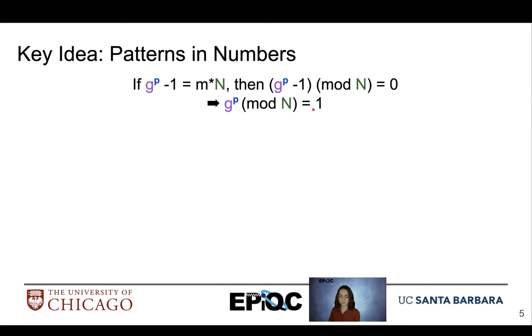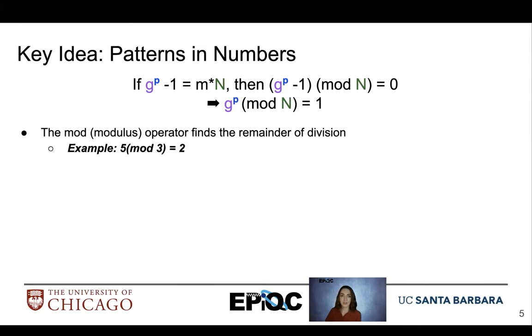So as a refresher, the modulus operation or mod finds the remainder of division. So here we have 5 mod 3 is equal to 2. In the case of our equation above, we see that if we have g to the p minus 1 equal to m times n, we know that if we divide this by n, we will get a value m, no remainder. So that's how we get the zero value here.